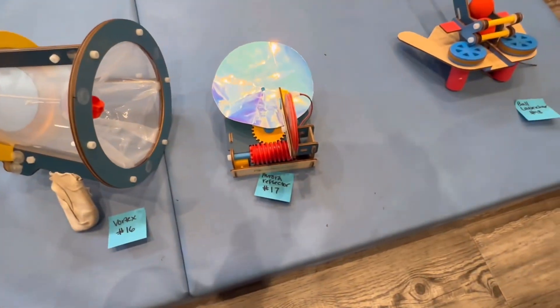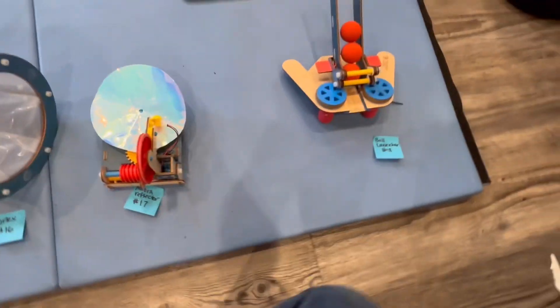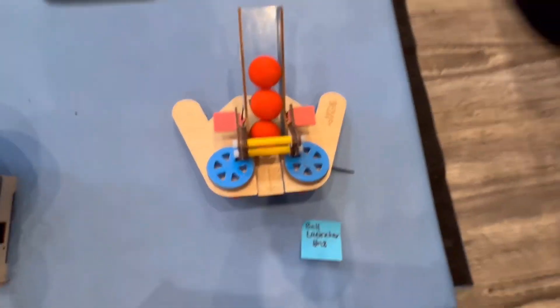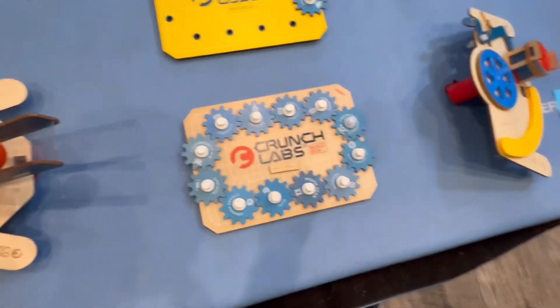The vortex, they learned about vortex. Iridescence with the aurora light thing. And then the ball launcher, they learned about dispenser.